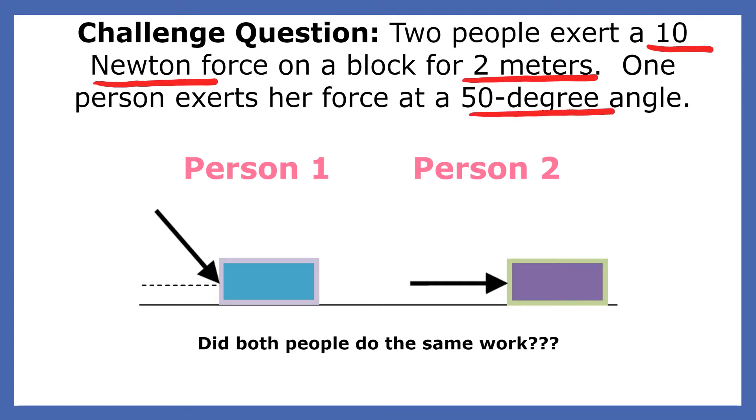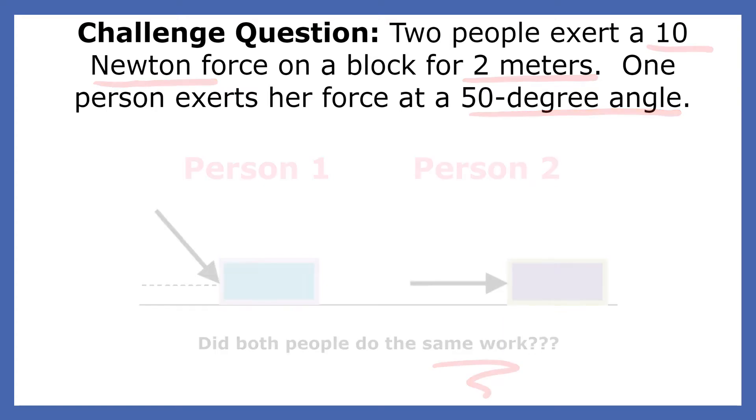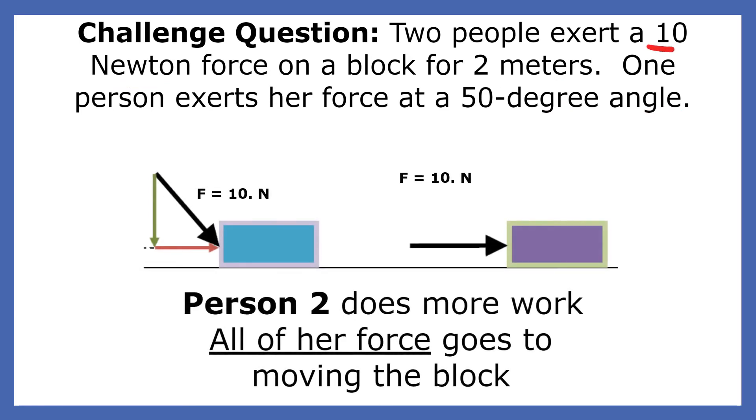One person exerts her force at an angle of 50 degrees, and the other exerts the force parallel to the direction of the motion. Do both people do the same work? Person two does more work because all her force acts parallel to the box's motion. Only the horizontal component of person one's force does work. Since the vertical component is perpendicular to the direction of the box's motion, it does no work.